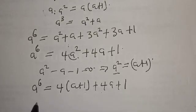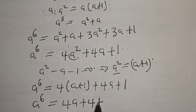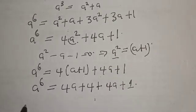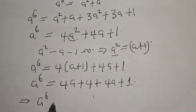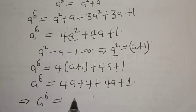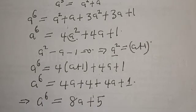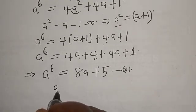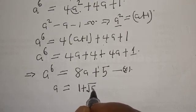Now let's substitute a squared equals a plus 1 anywhere we see a squared. This implies a raised to power 6 equals 2a plus 1 plus 3 times a plus 1 plus 3a plus 1, which gives 2a plus 1 plus 3a plus 3 plus 3a plus 1. Combining like terms: 8a plus 5. Let's call this equation star.